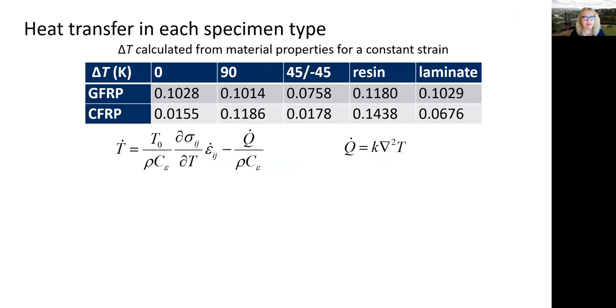The heat transfer is controlled by this heat transfer equation where T dot can be seen as the rate of temperature change that's occurring during the cycle and this is related to the stresses and the rate of change of strain epsilon.